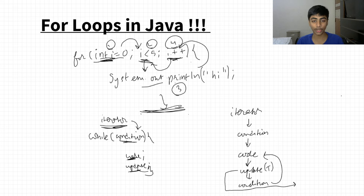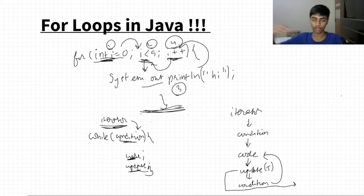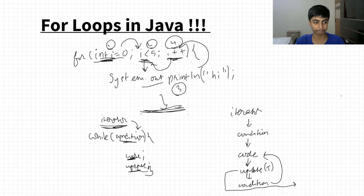Just execute the for loop step by step: iterator, condition, code, update, condition, code, update — same thing as the while loop, just rearranged. It seems overwhelming but once you understand it, it's quite easy.